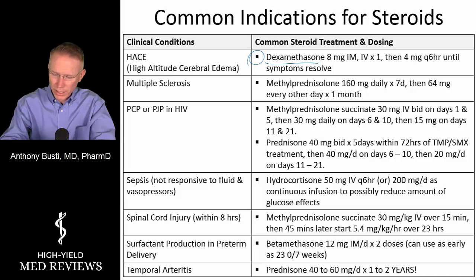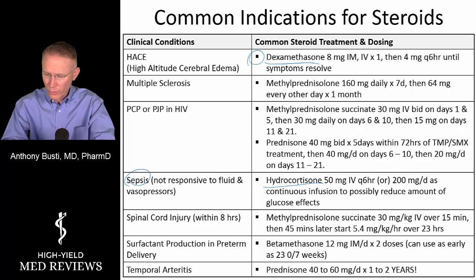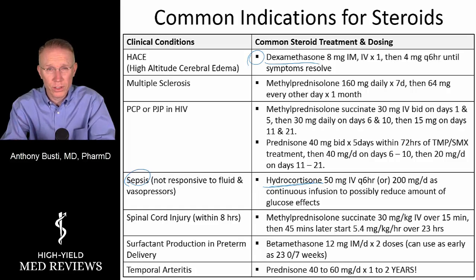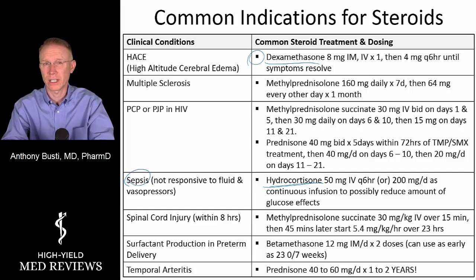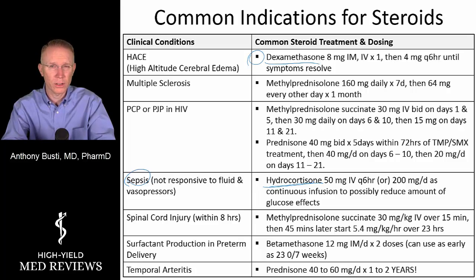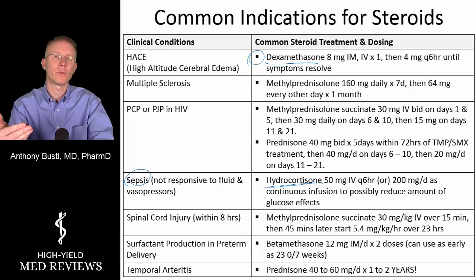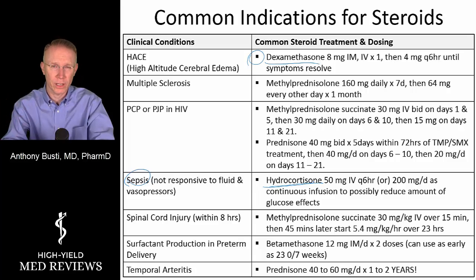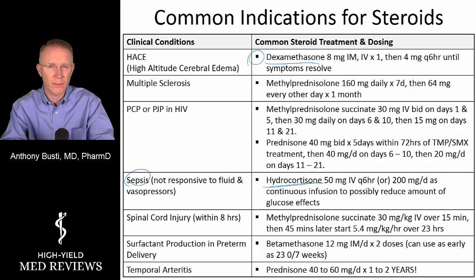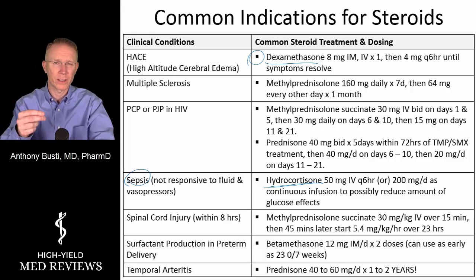Let's look at the example of sepsis. Why do we reach for hydrocortisone when someone has failed fluid resuscitation, started antibiotics and vasopressors, and still needs blood pressure support to maintain their MAPs? It has more mineralocorticoid activity, which causes more sodium and water retention, increasing plasma volume and hopefully increasing blood pressure and mean arterial pressure to perfuse the various organs in the context of sepsis. So the indication guides which steroid is used depending on what we desire and its side effect profile.